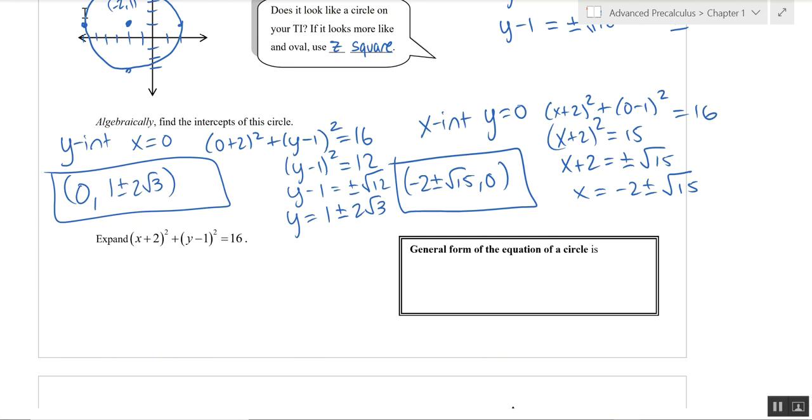Those are X-intercepts and that is our Y-intercept over there. Alright, let's talk about the general form of an equation first before we expand this problem on the left. So the general form of the circle is always A X squared plus B X Y plus C Y squared plus D X plus E Y plus F is equal to zero.